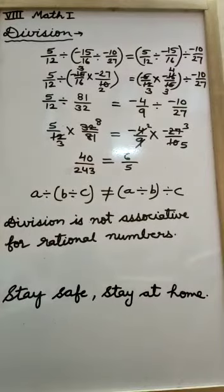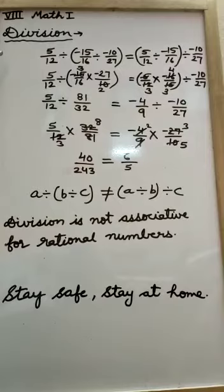Now, associative property over division. As with subtraction in division, if we take 3 rational numbers to divide and group them in any order and solve, we do not get the same answer. Like this example: